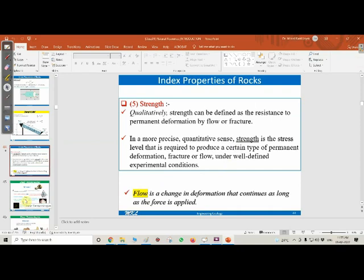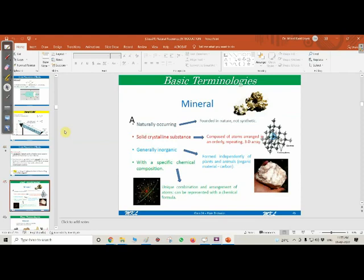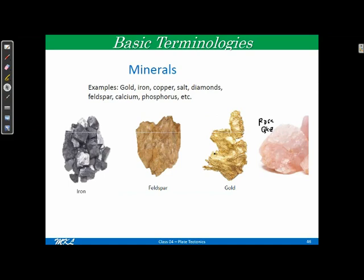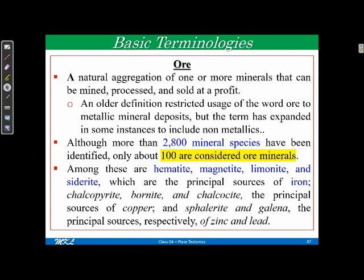These terms look random but will all be used in petroleum geology. A mineral is a naturally occurring, solid, crystalline, inorganic substance with a specific chemical composition — like gold or quartz. Quartz is the most abundant mineral in the world. The white portion in a rock sample is quartz; the red portion is K-feldspar (K = potassium). Iron, feldspar, gold, and quartz are examples of minerals.